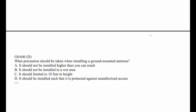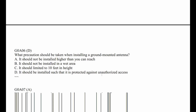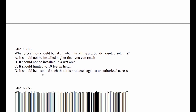G0A06: What precaution should be taken when installing a ground-mounted antenna? One of the concerns is that somebody would grab hold of it as you're on the air. So it should be installed such that it is protected against unauthorized access — in other words, installed so that someone can't get to it.